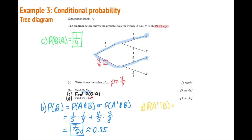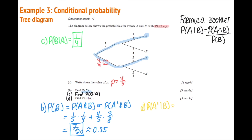Part d: find the probability of not-A given B. Since B is the second event and not the starting branch, we must use the full conditional probability formula. The numerator is P(not-A and B) = 4/5 × 3/8. The denominator is P(B) = 7/20, which we found in part b. Putting this into the calculator gives 6/7, or approximately 0.857.